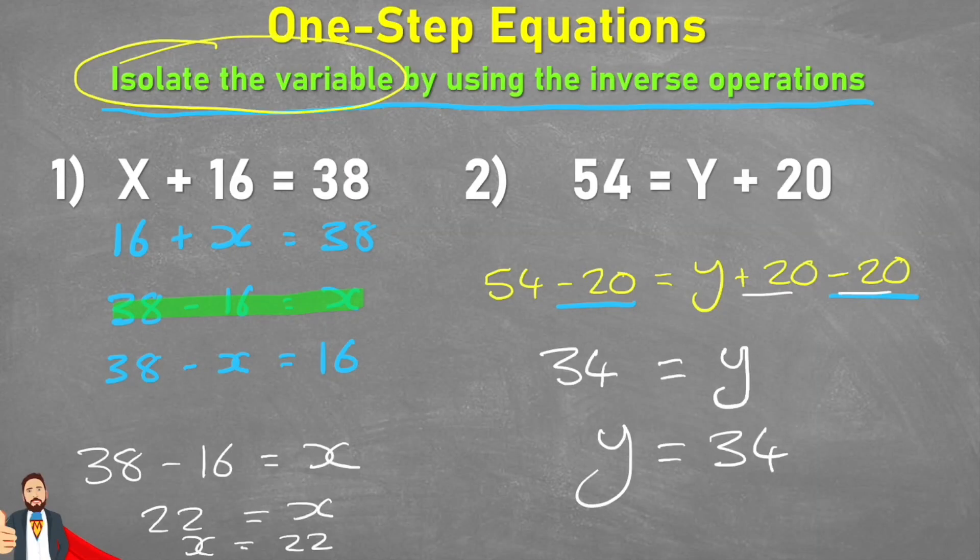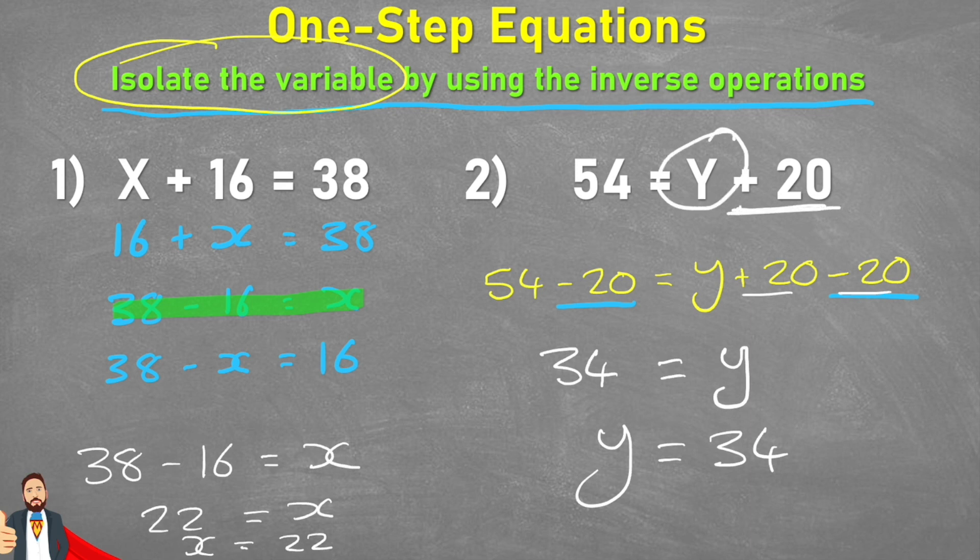Or if I'm doing it in this second method, I'm going to isolate the variable by getting rid of whatever's attached to it. But whatever I do to one side, I must also then do to the other. And there you go.